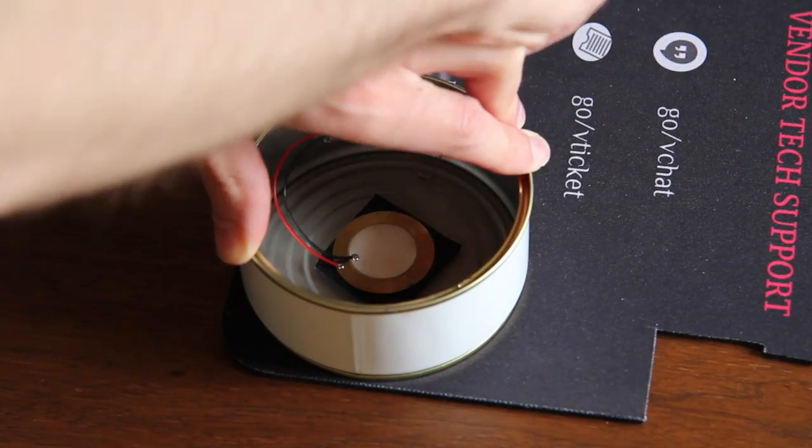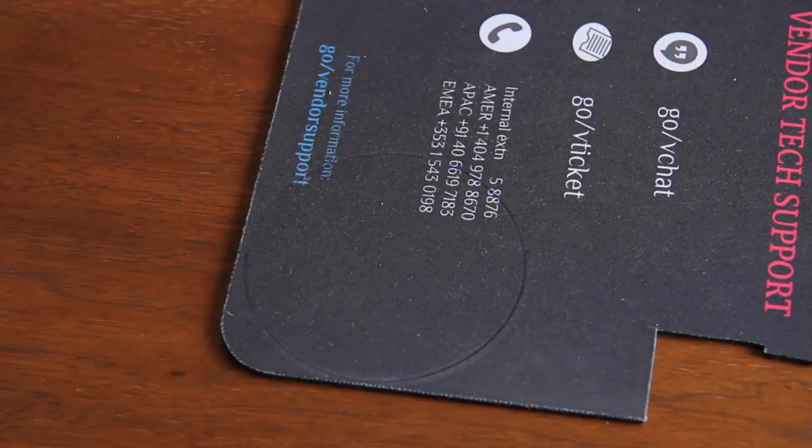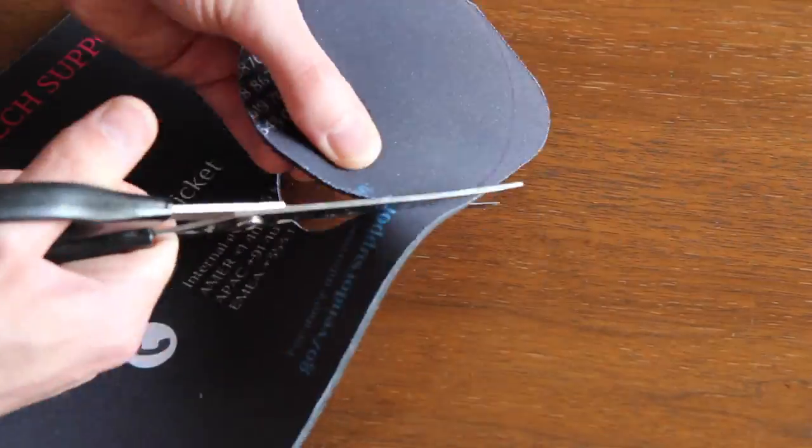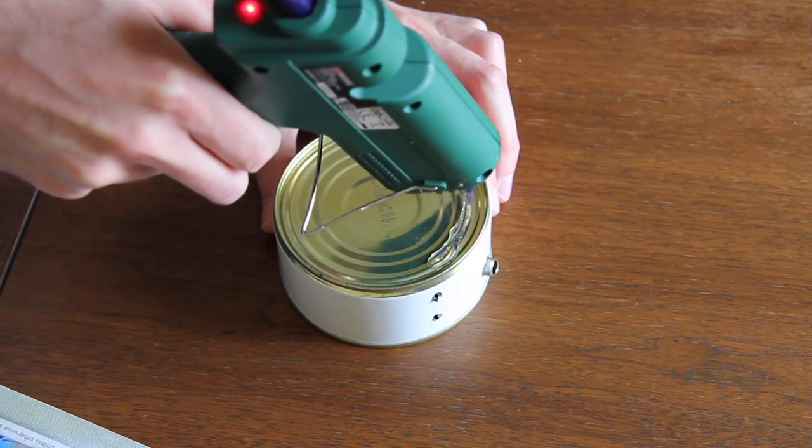Use the form of the can to mark the circle on the rubber mouse pad. Cut it out and use hot glue to attach it to the can.